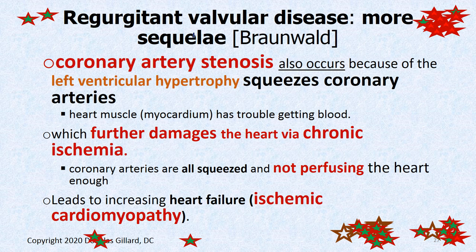With both mitral valve prolapse and aortic valve prolapse, there's another sequela. The heart, trying to pump with Starling's Law constantly enforced, starts to get very muscular — just like a bodybuilder. In some people, as it gets muscular, it starts to squeeze the coronary arteries to the point where it cuts off blood flow to the heart, contributing to the death of heart tissue. When that happens, that's called ischemic cardiomyopathy.